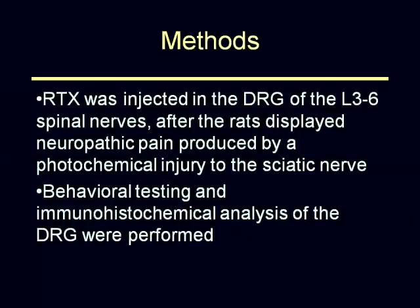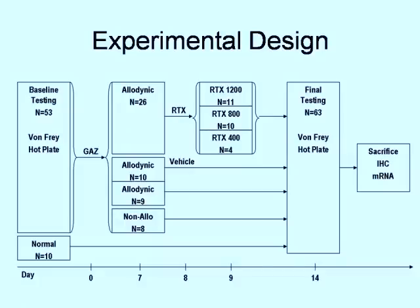So what we did — we created the following experimental design. We took 53 rats and tested them for tactile allodynia with von Frey filaments and for thermal hyperalgesia with a hot plate. Then we created the Gazelius model of nerve injury where we irradiate a nerve, and most rats develop neuropathic pain. We then took the allodynic rats and treated them with different doses of RTX. We did final testing at 14 days, then sacrificed them and analyzed them by immunohistochemistry and mRNA analysis.